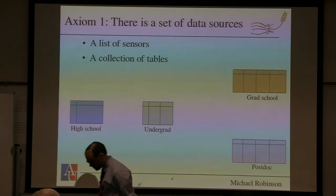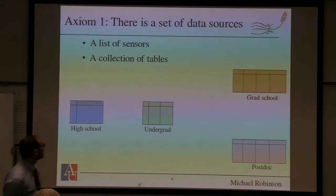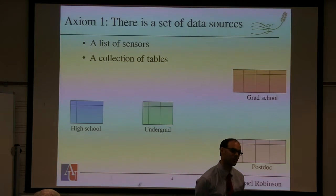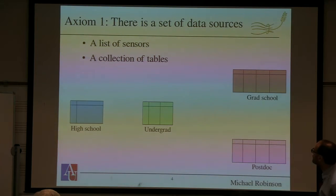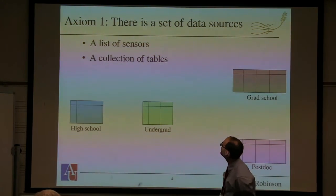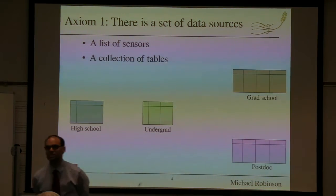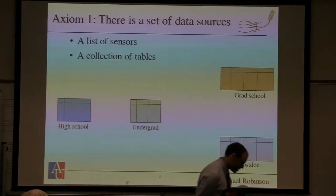So let's start off. I'm going to do this axiomatically — I'm going to tell you axiomatically what are the different things that you would like to have, and walk through what the data fusion problem is from the point of view of these axioms. In particular: what are the things I would like to have happen? First of all, if I'm going to talk about a data fusion problem, I need to have some data — a set of data sources, which could be a list of tables, a list of sensors, or a bunch of objects that I know some things about.